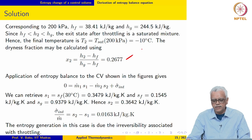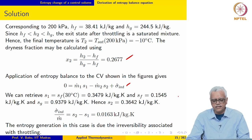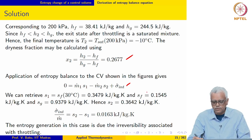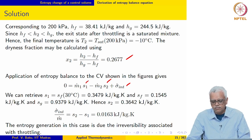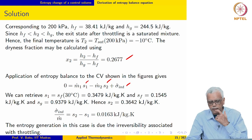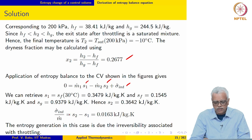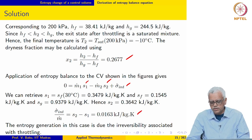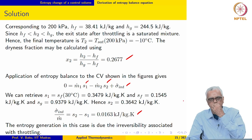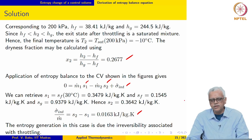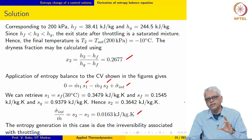The dryness fraction at the exit of the throttling valve may also be evaluated, and application of the entropy balance to the control volume — the integral drops out because the device is insulated. Substituting the values for S_1 and S_2 on a per unit mass flow rate basis, we get σ̇_int / m_dot equal to 0.0163 kJ/(kg·K). Once again this is positive, due to internal irreversibility associated with throttling the fluid.